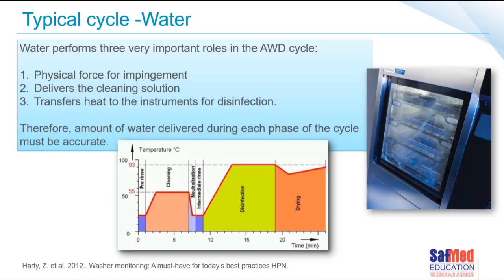Water performs three important roles in the automated washer disinfector cycle: it is the physical force for impingement, it delivers the cleaning solution, and it transfers heat to the instruments for the disinfection phase. The amount of water delivered during each phase must be 100% accurate. Water pressure is used to clean and rinse the instruments — this is also known as the impingement value: the mechanical force of water against surfaces inside the chamber. High impingement means water is sprayed at high pressure, while a low impingement washer relies more on chemistry to achieve the desired cleaning result.